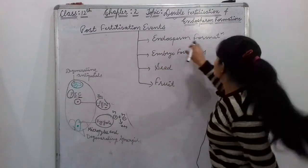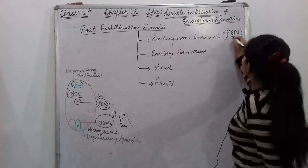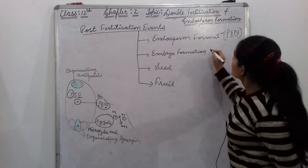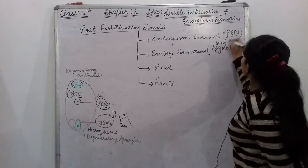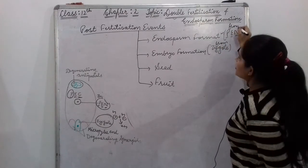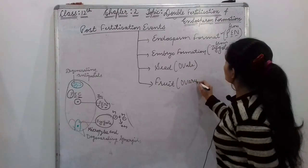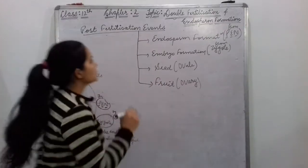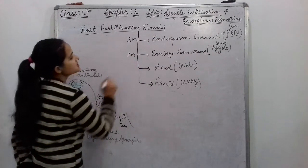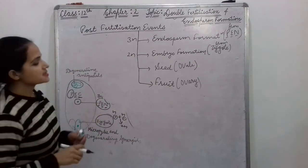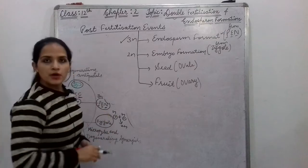Today we will do endosperm formation. Endosperm formation comes from the primary endosperm nucleus. Embryo is formed from the zygote. Seed is formed from the ovule. Fruit is formed from the ovary. Endosperm formation is a triploid condition; embryo formation is diploid condition. We will discuss them one by one in our next classes as well, but today we are going to discuss endosperm formation.